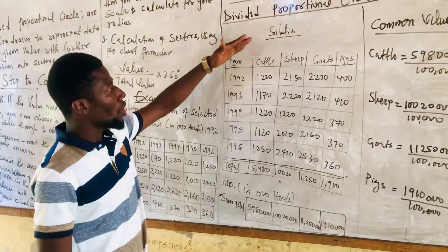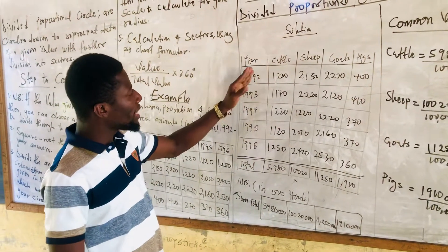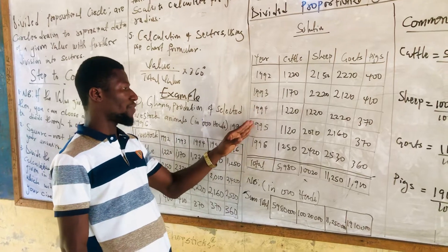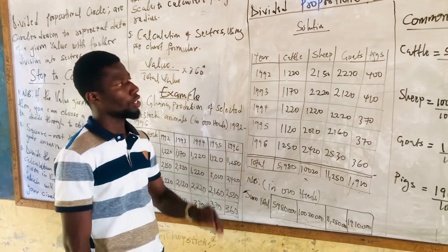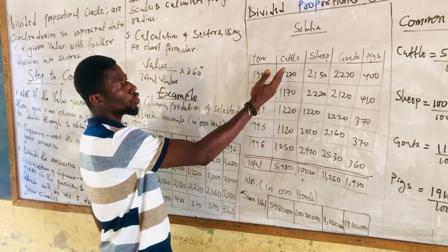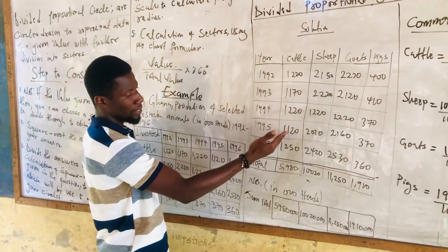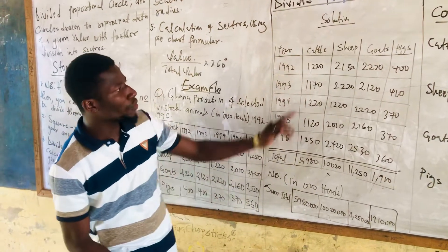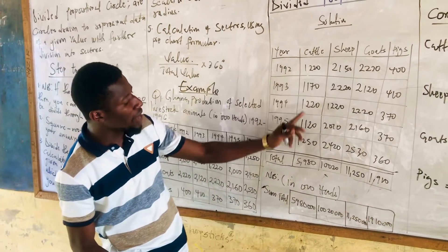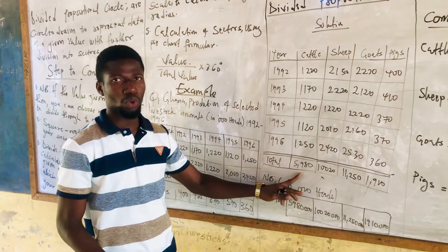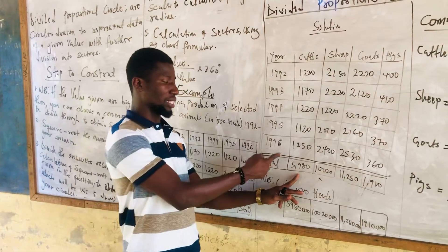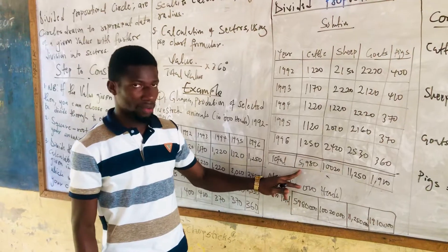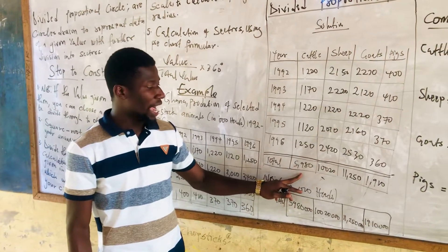In our solution table, we have the year and the cattle column. We record the values for each of the years. When we finish, we find the total value of cattle recorded from 1992 to 1996, and the total was 5,980.